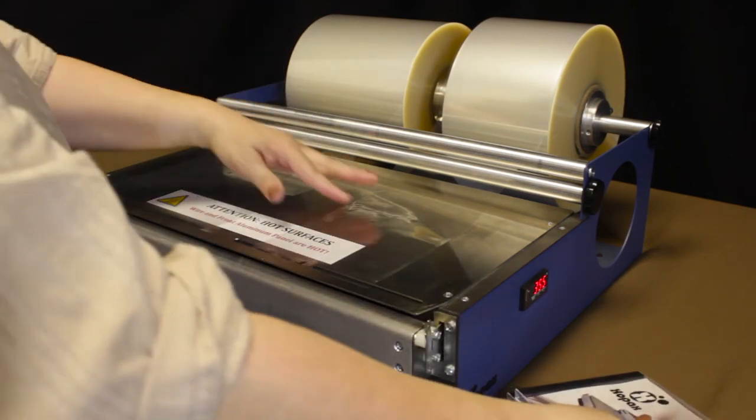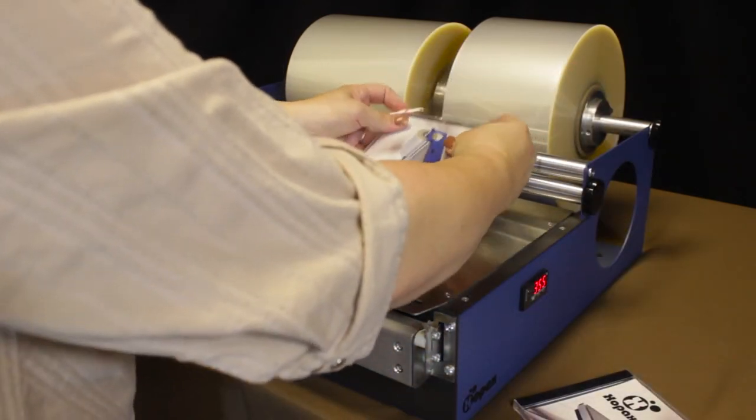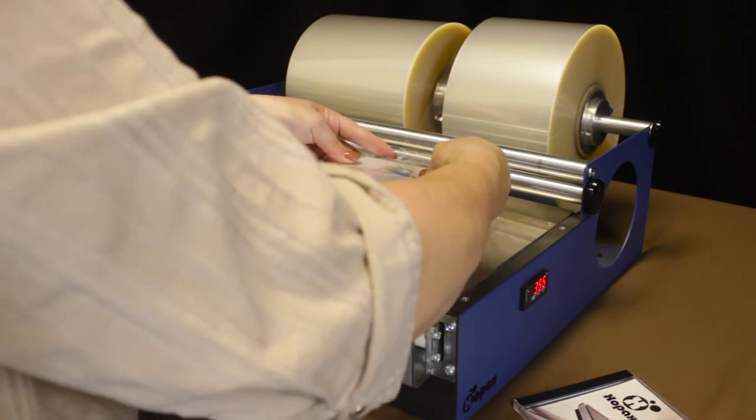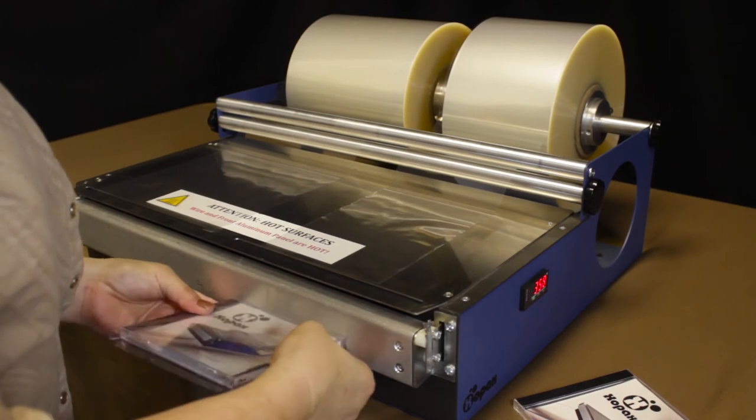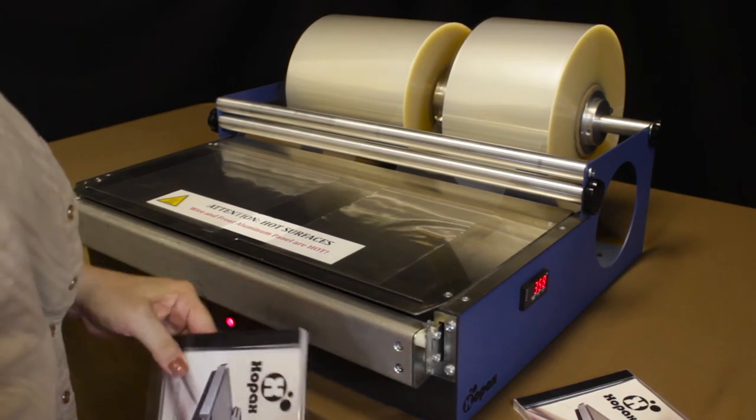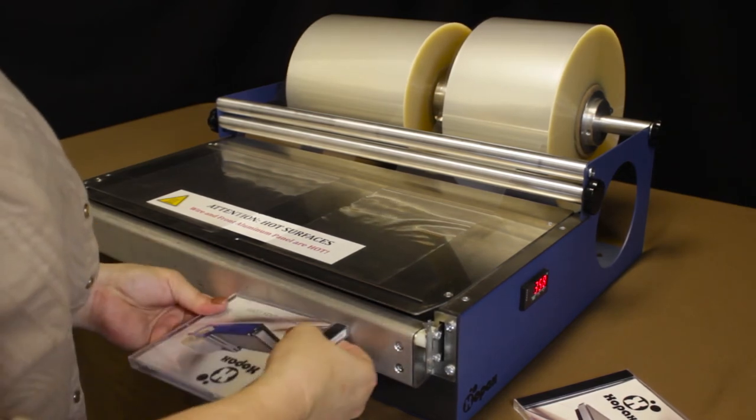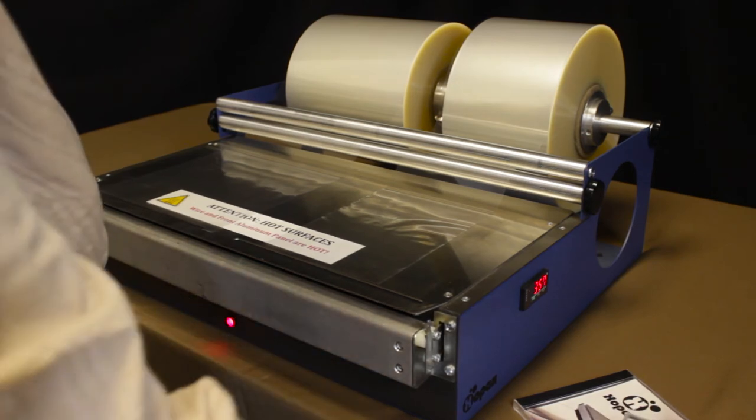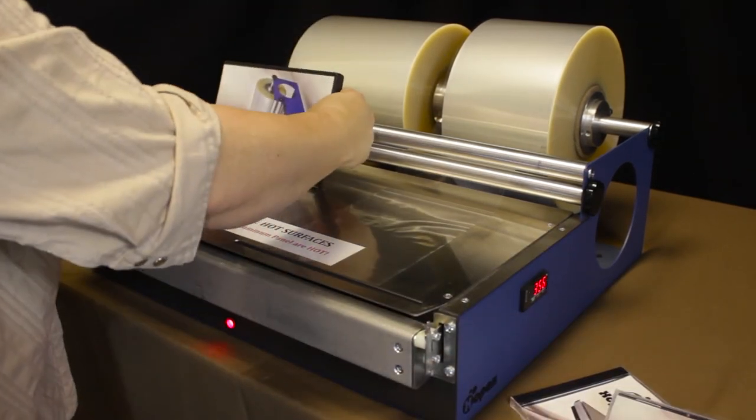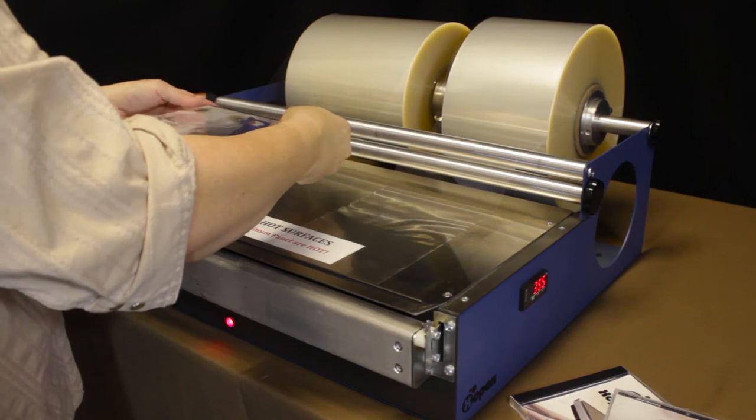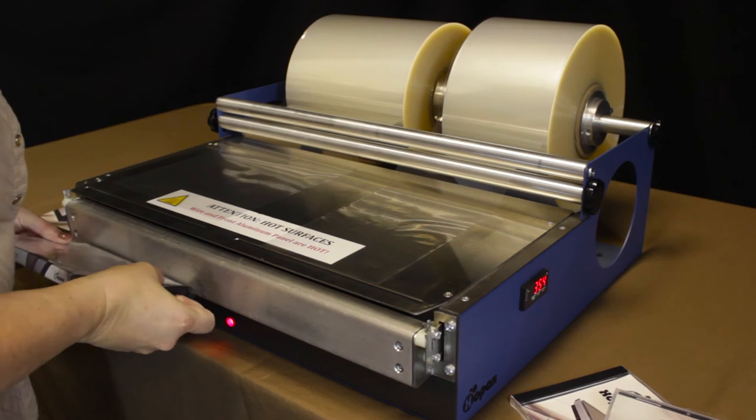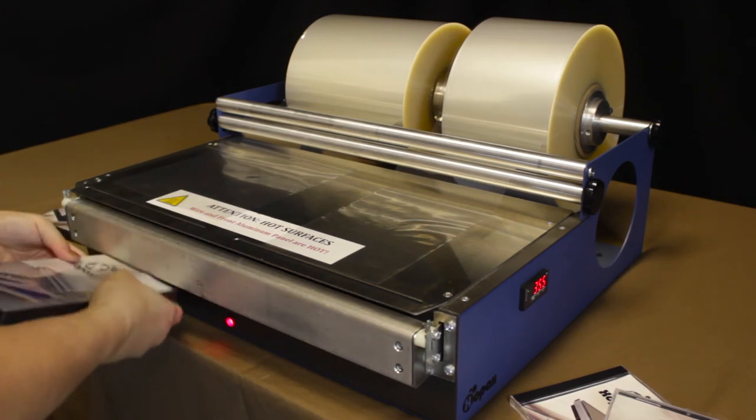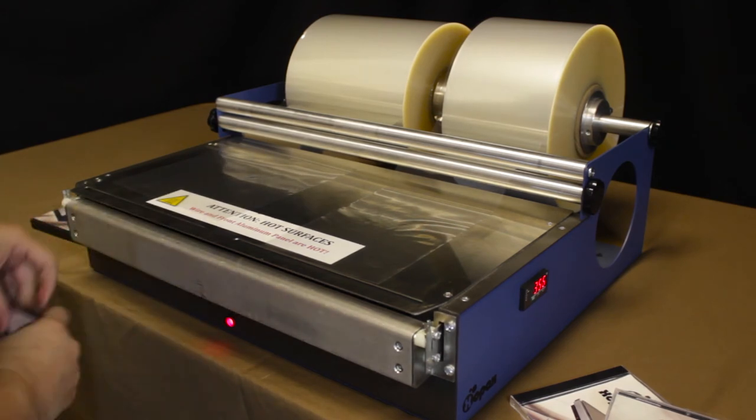So I can alternate between wrapping a CD and a DVD very easily. And what's nice about this is if you're in the middle of wrapping one job and you need to interrupt it to wrap another, it's very simple. You don't need to undo anything. You don't need to move your cutter out of the way. You don't need to load a heavy roll of film. You just simply wrap.